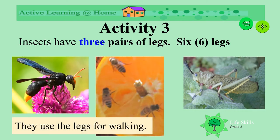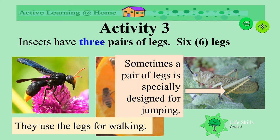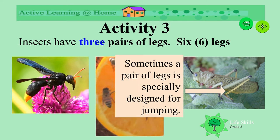Insects have three pairs of legs — six legs in total: two forelegs, two mid legs, and two back legs. The legs are used for walking, and sometimes a pair of legs is especially designed for jumping, like in a grasshopper or a locust.